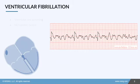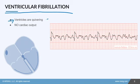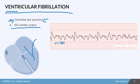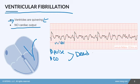In ventricular fibrillation, the ventricles are just quivering. There is absolutely no cardiac output — the ventricles are just sitting there doing nothing. No blood is going in and no blood is going out, so there is no pulse, there is no output. They are basically dead and we have got to start CPR immediately.